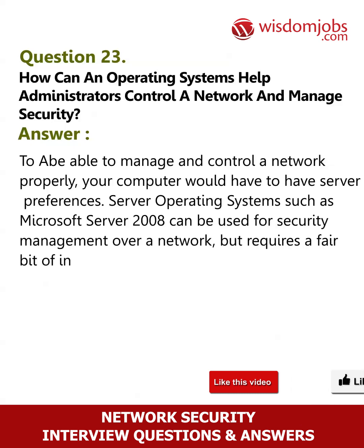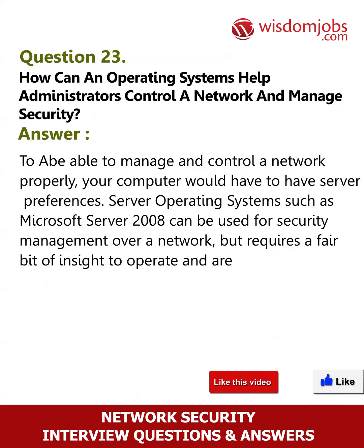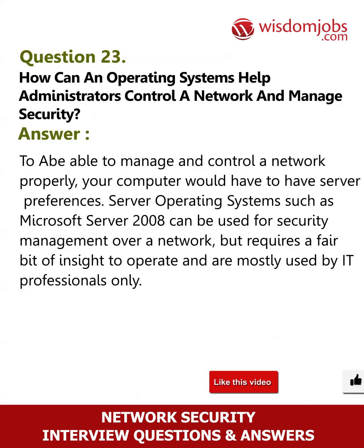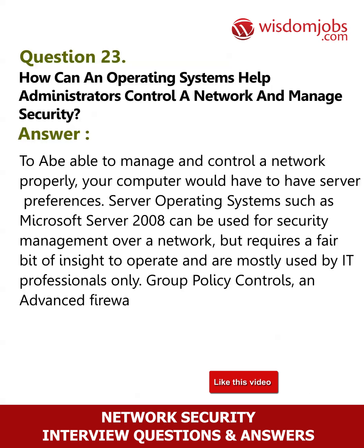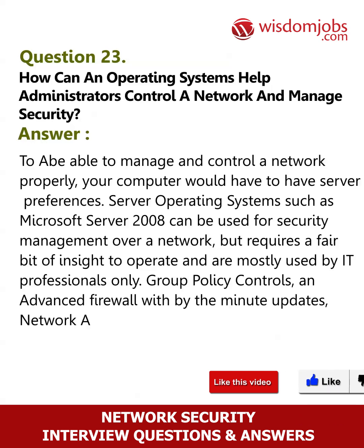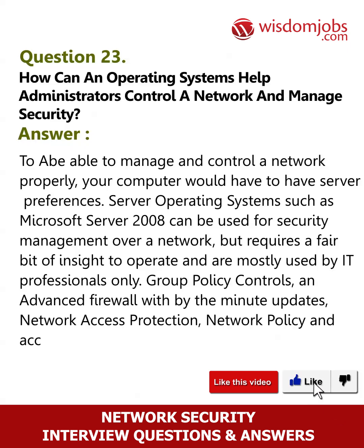Group policy controls, an advanced firewall with by-the-minute updates, network access protection, and network policy and access systems are examples of such capabilities. Windows 7 also has a few network security capabilities built-in.